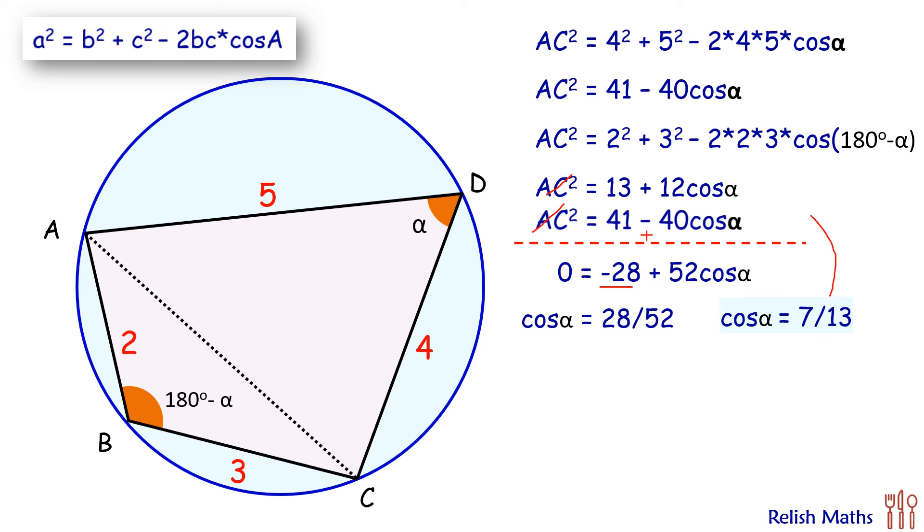We'll put the value of this cos α in this equation to get AC² = 13 + 12 × (7/13). Simplifying, we'll get AC² = 253/13, or AC = √(253/13).